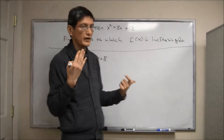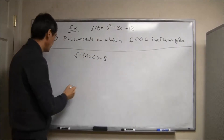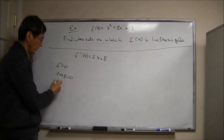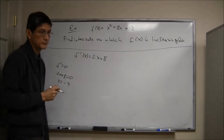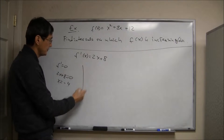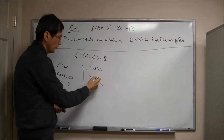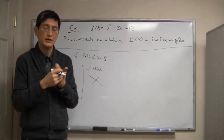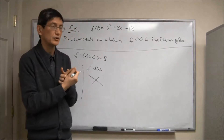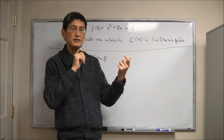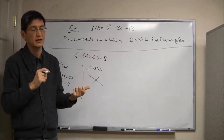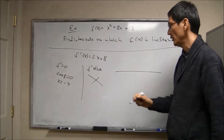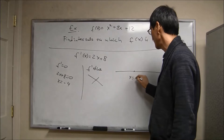Now we want to see where the derivative is positive or negative. To do that we set derivative equal to zero: 2x plus 8 equals zero, so x equals negative 4. In general we also check where derivative does not exist, but we don't have to worry about that here since it's a binomial. These are the points where the derivative might change sign, so in our case we get only one point: x equals negative 4.